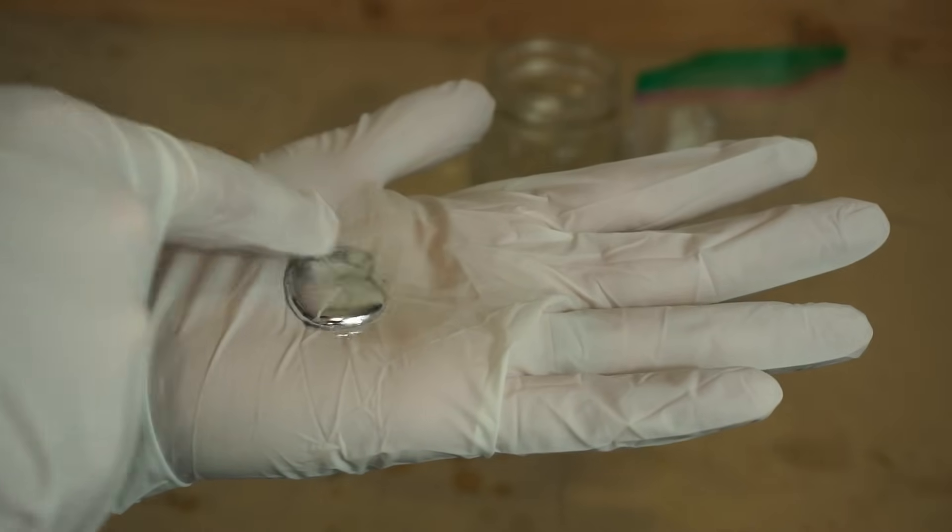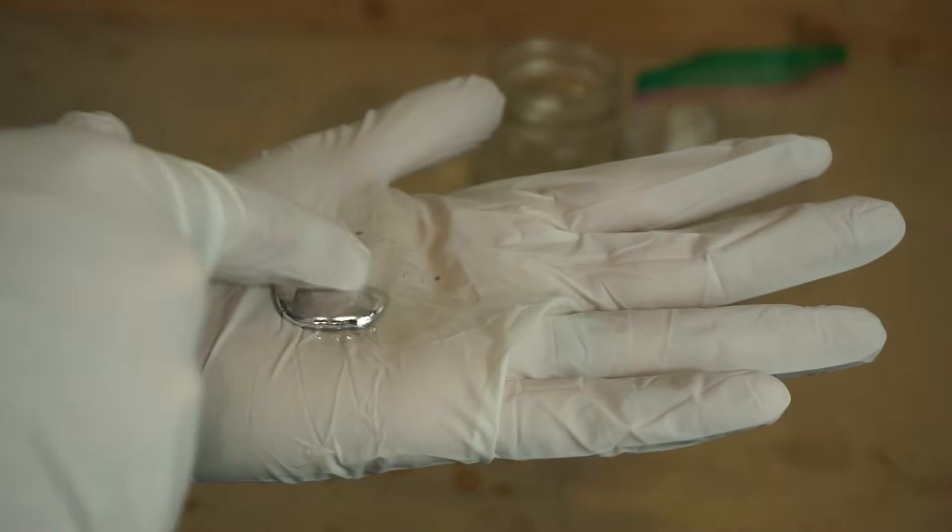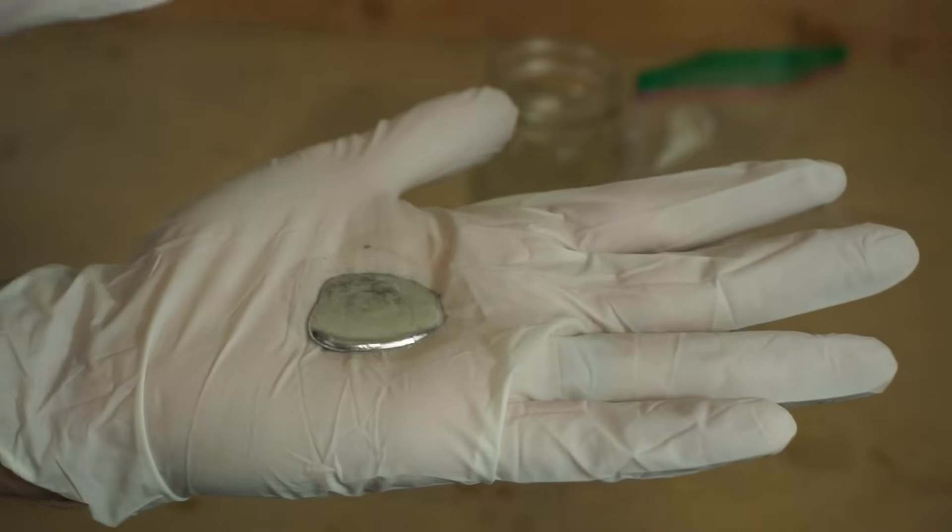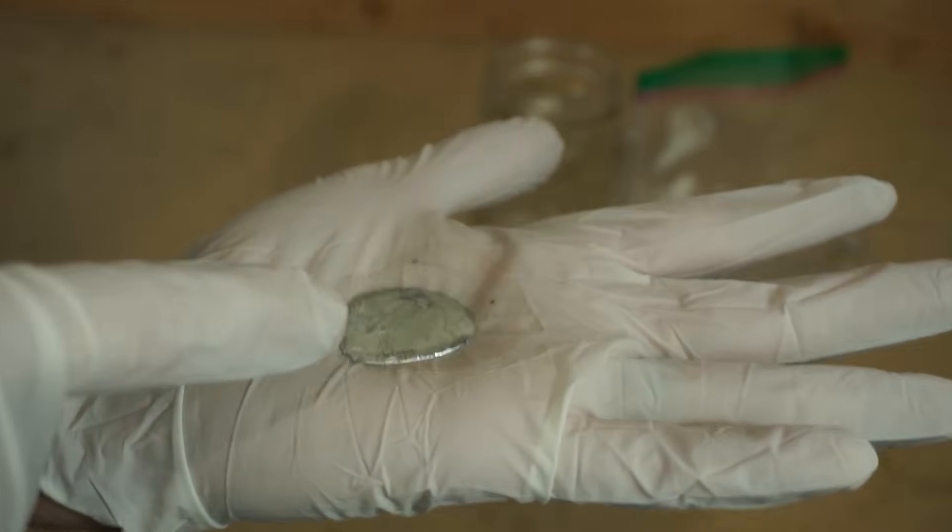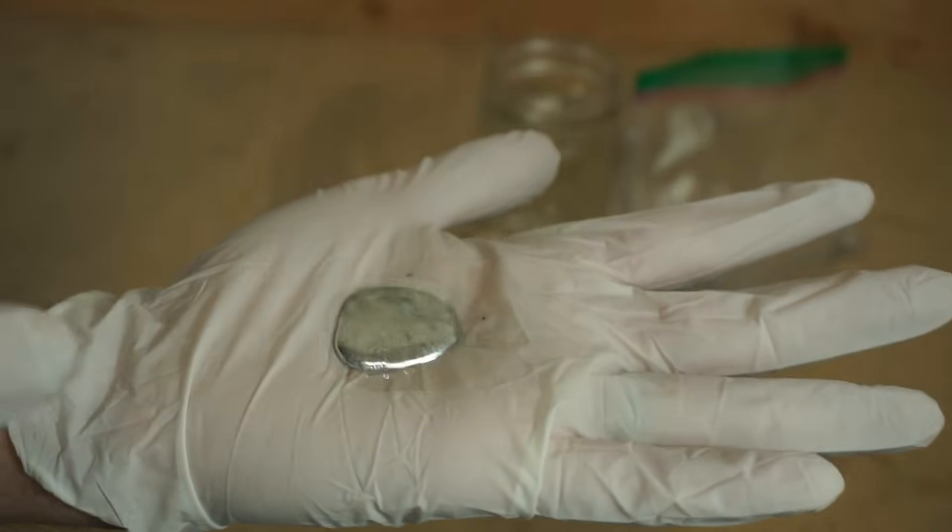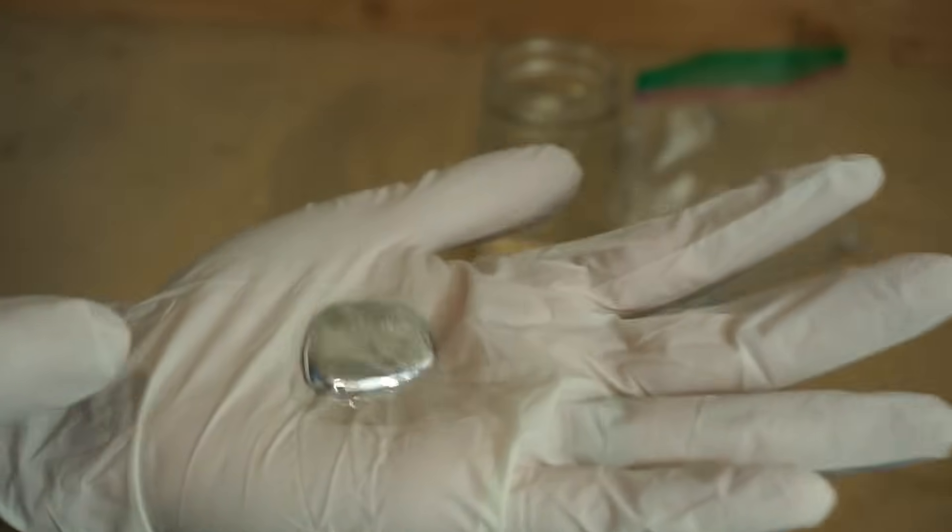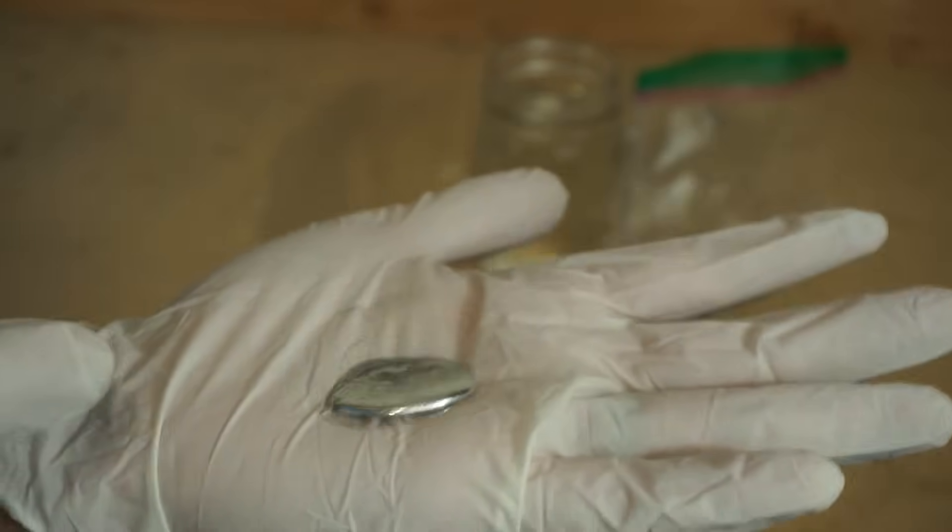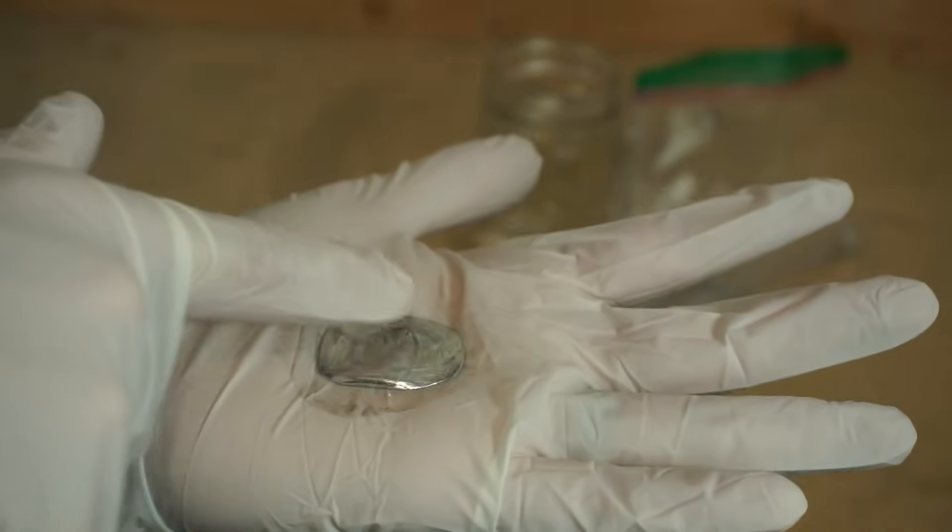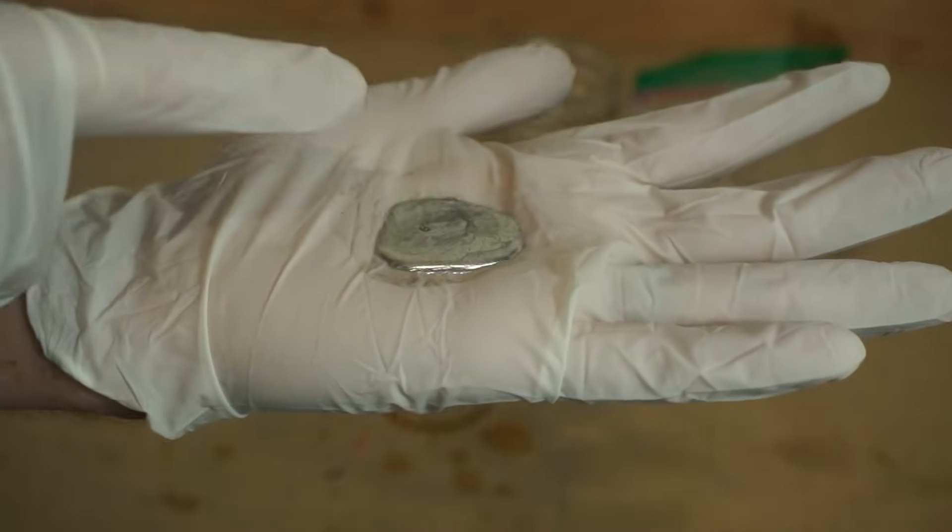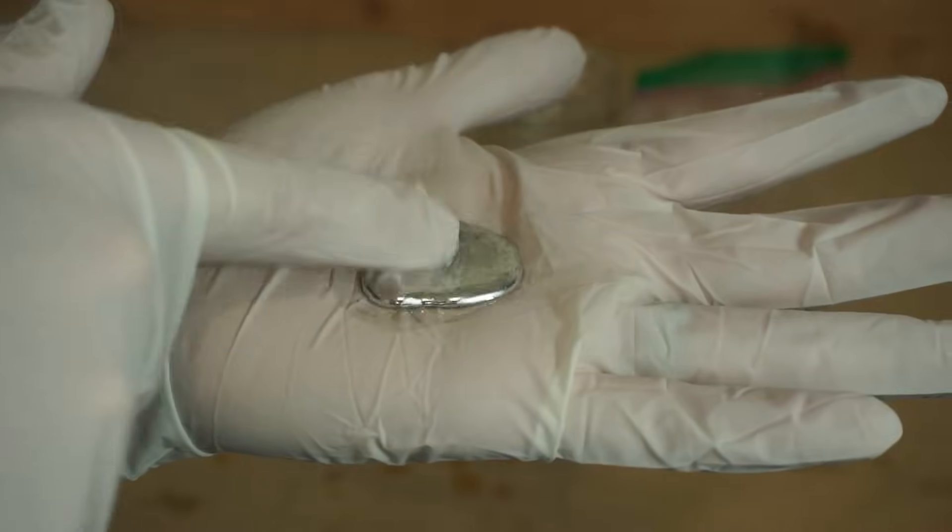Another thing to be careful with gallium is that gallium diffuses into the lattice structure of most metals and makes them very brittle. So if you get gallium on aluminum, it will make the aluminum become very brittle. It'll even do it for steel too. So you have to be careful what you get the gallium on if you don't want to turn your strong metals into something that's brittle.